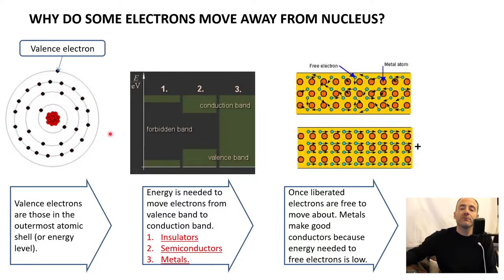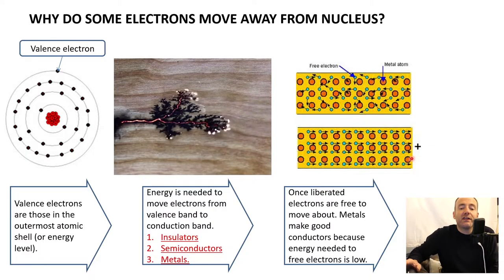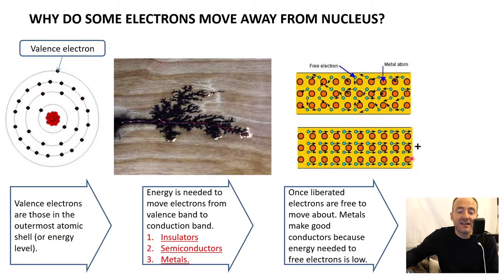So what encourages some electrons to move away from their nucleus? If we take our simple picture of an electron and look at its outer shell, the valence shell, we can see in some atoms we'll have a valence electron. If we want that electron to move away from the atom, we need to move it into what we call the conduction band. Here we've got an energy level diagram. In this material labeled number one, we're in our valence band, and we've got a massive jump in energy to take that electron from here right up to here. We have to provide an enormous amount of energy to do that, and that type of material would be an insulator.